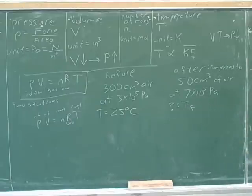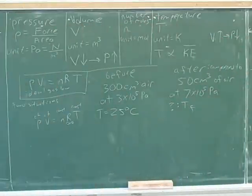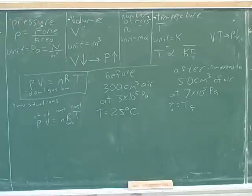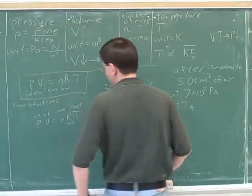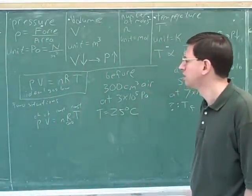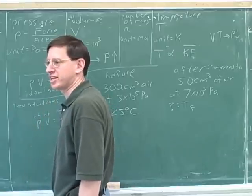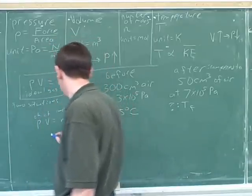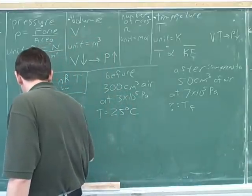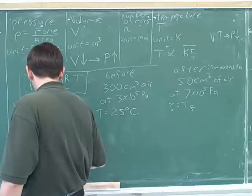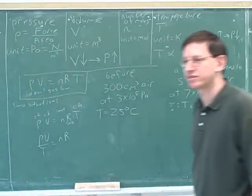So why don't we walk through how we would work that out. Any ideas how we would get started here? Okay, so n and R are not changing, so that means PV over T equals nR. Good. Now, in this problem, the temperature is changing, so you want to get everything that's changing on one side and everything that's constant on the other.